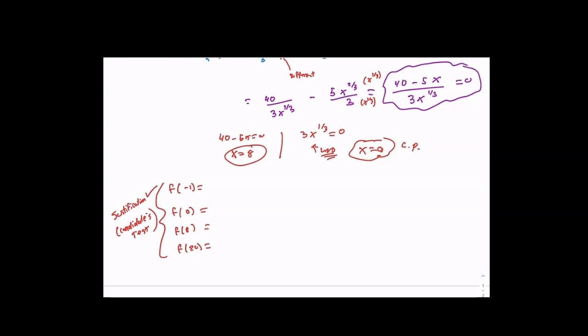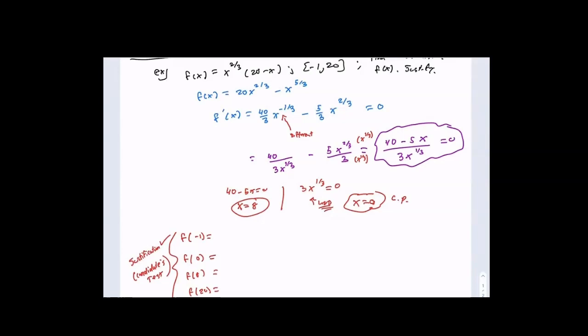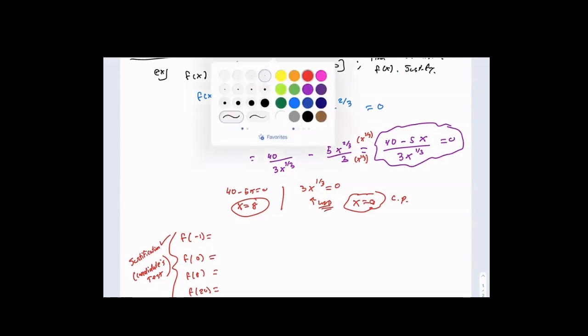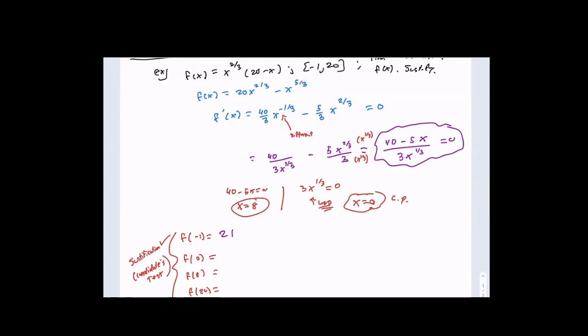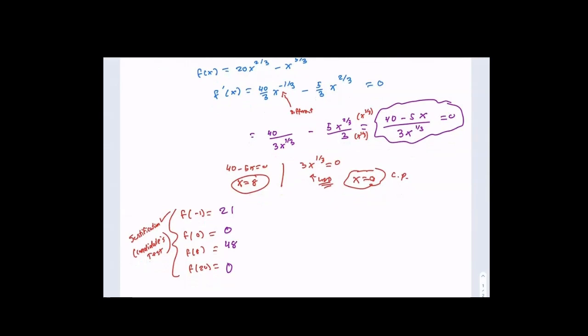Feel free to use your calculator. Plugging into the original function: f of negative one gives 1 times 21, so 21 — negative one to the two-thirds is positive one. f of zero gives zero. f of twenty also gives zero. And f of eight gives 2 squared times 12, which is 4 times 12 equals 48. So we have a min at zero and a min at zero again, and a max at 48. This is interesting because there are two minimums.